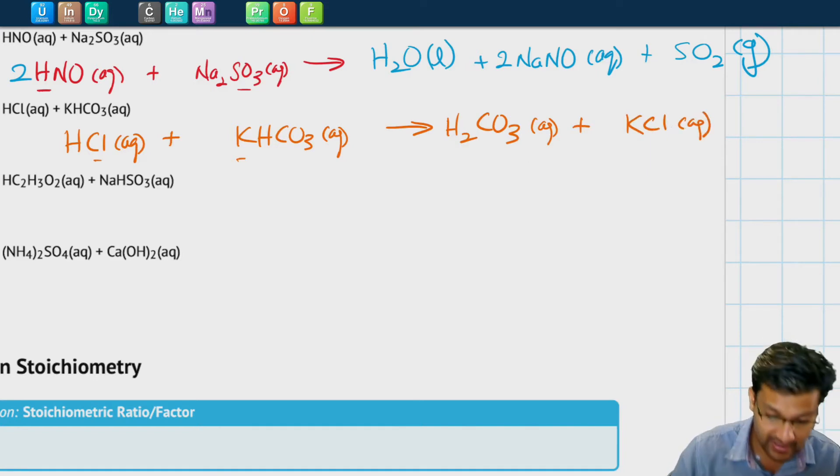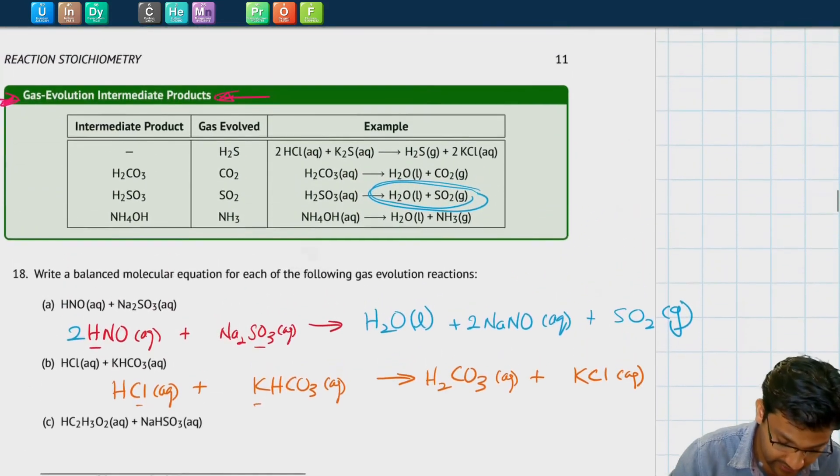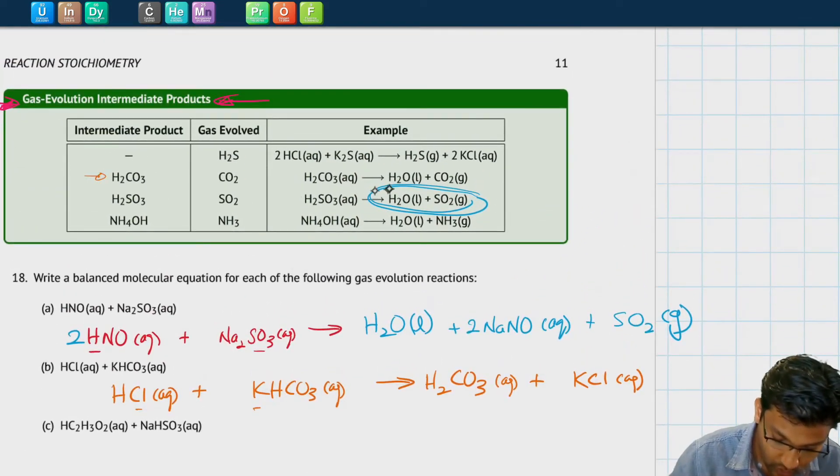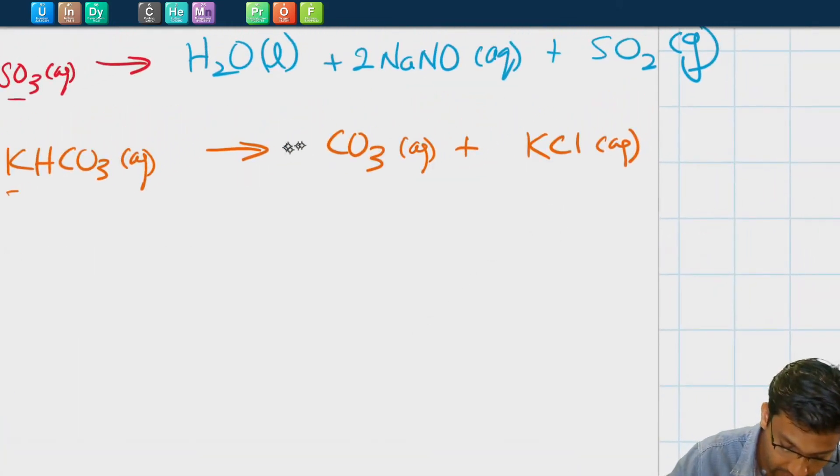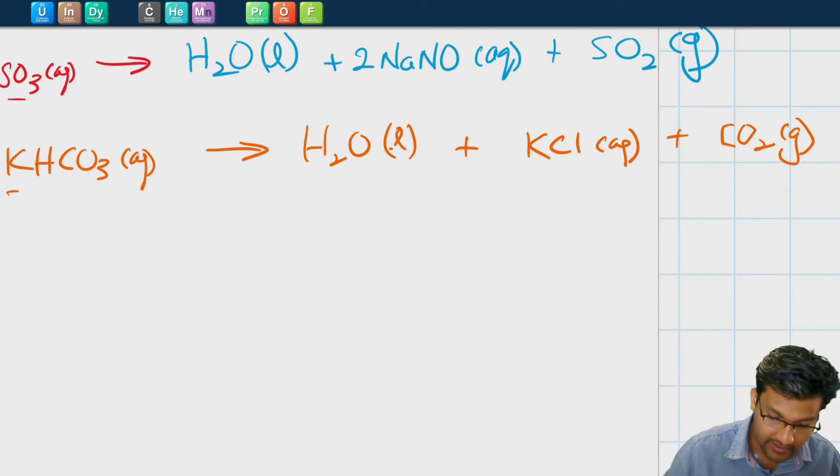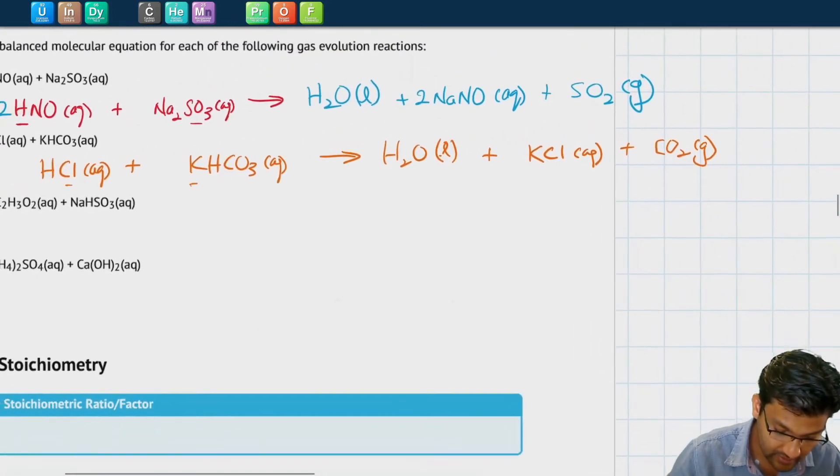But H2CO3 is one of those products right here that breaks down into water and carbon dioxide, so instead of H2CO3, I'll replace this with water liquid and carbon dioxide gas. And so this here is the balanced chemical reaction.